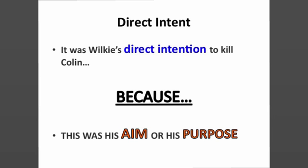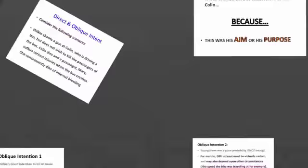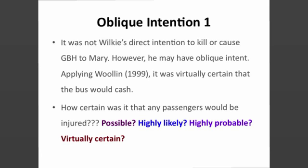It was Wilkie's direct intention to kill Colin, the bus driver. The direct intention is to kill the bus driver — this is Wilkie's aim or purpose. There was also oblique intention here. It was not his direct intention to kill or cause grievous bodily harm to Mary, but from the scenario we know that he has done that.